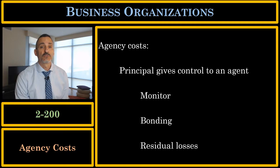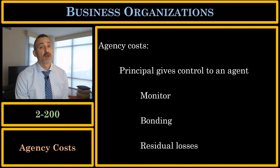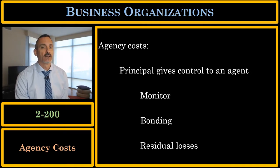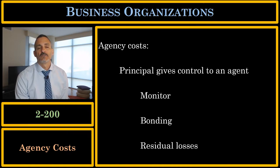Sometimes you walk into a store and you see security cameras. Those are security cameras, but they are often also used to monitor the agents — to make sure that the agents are working carefully and are not stealing from the store. The next category of agency costs are called bonding costs.